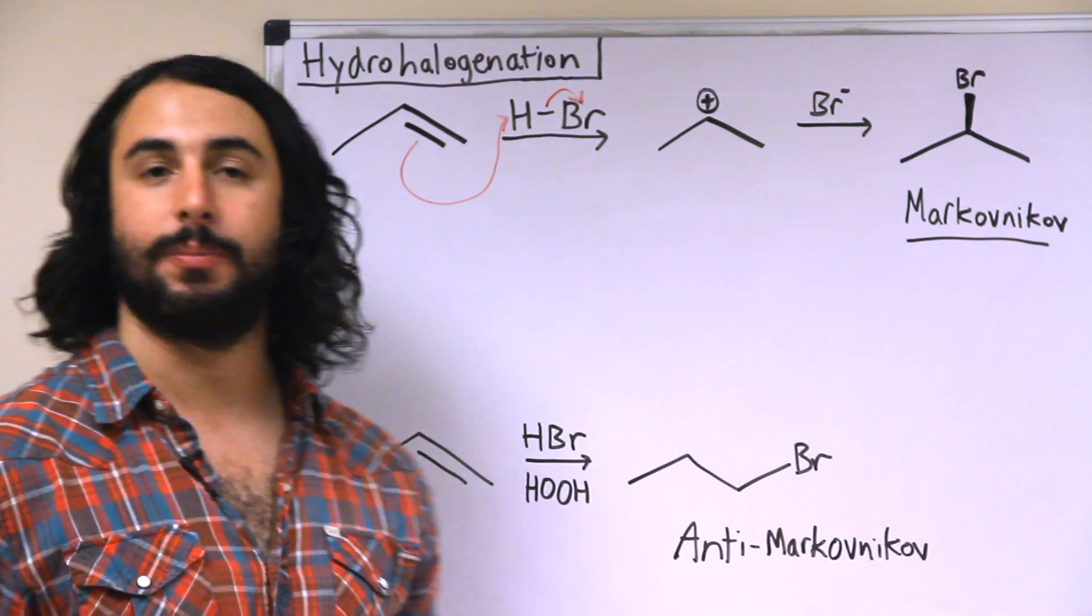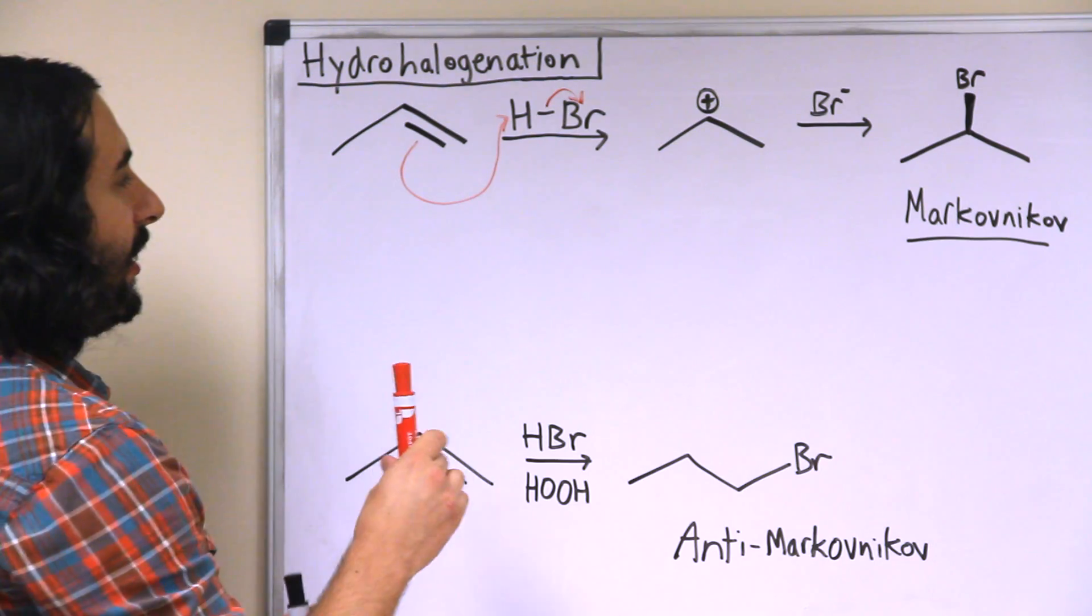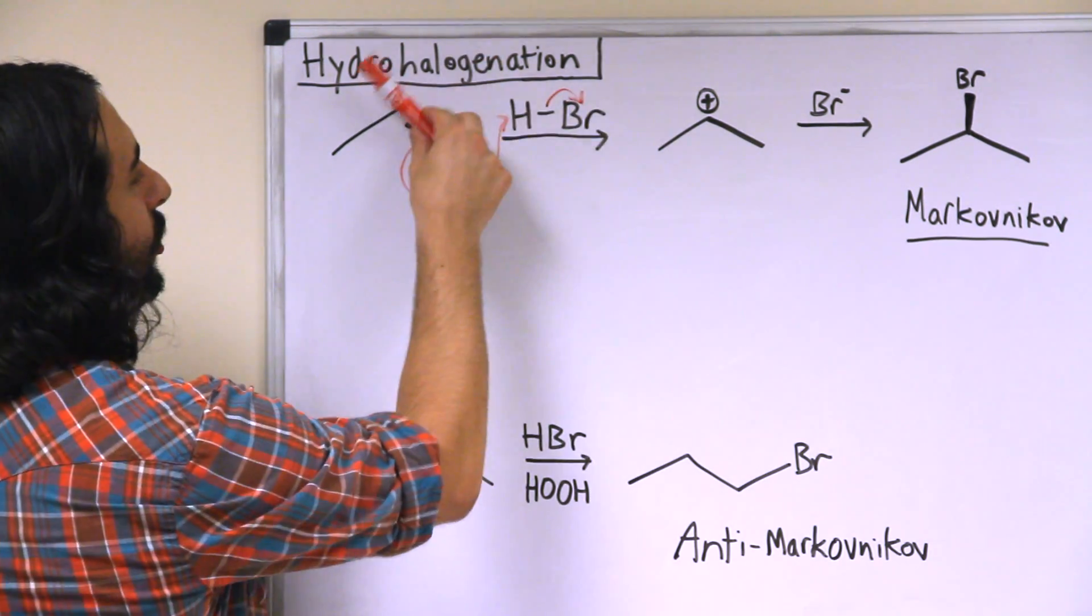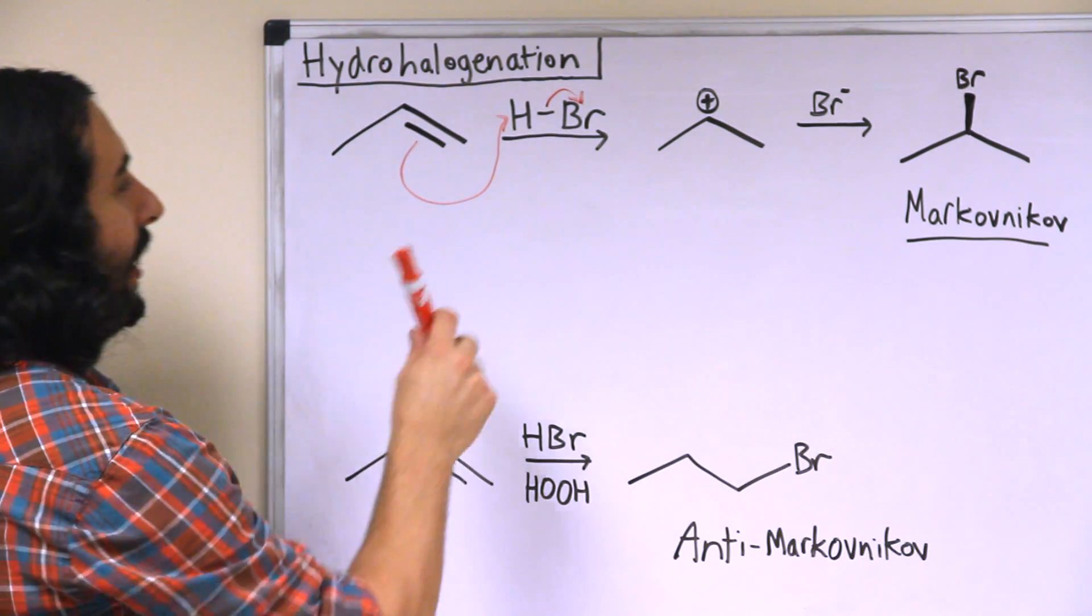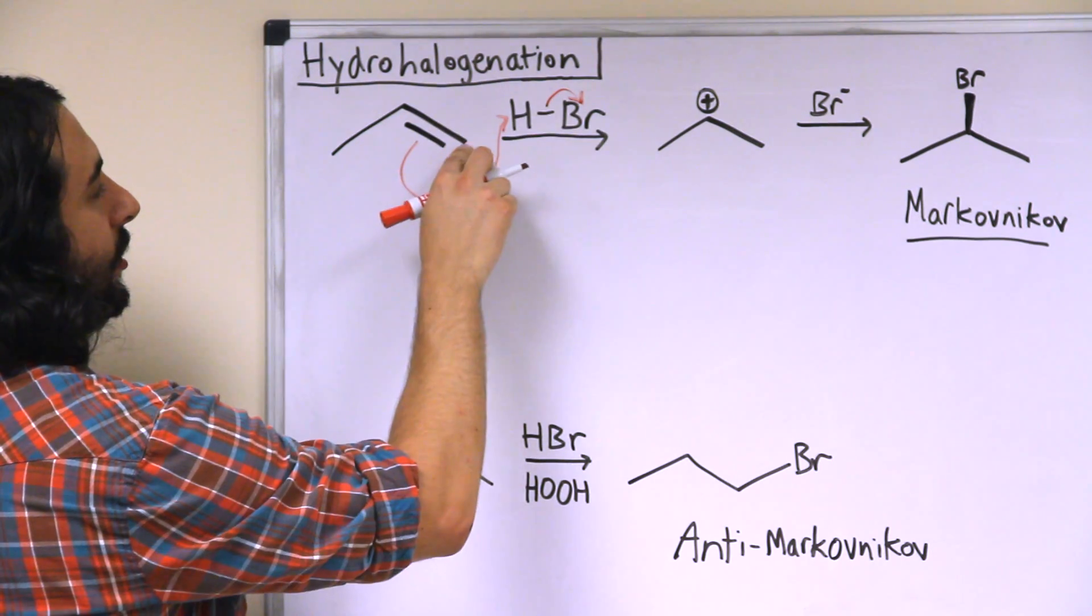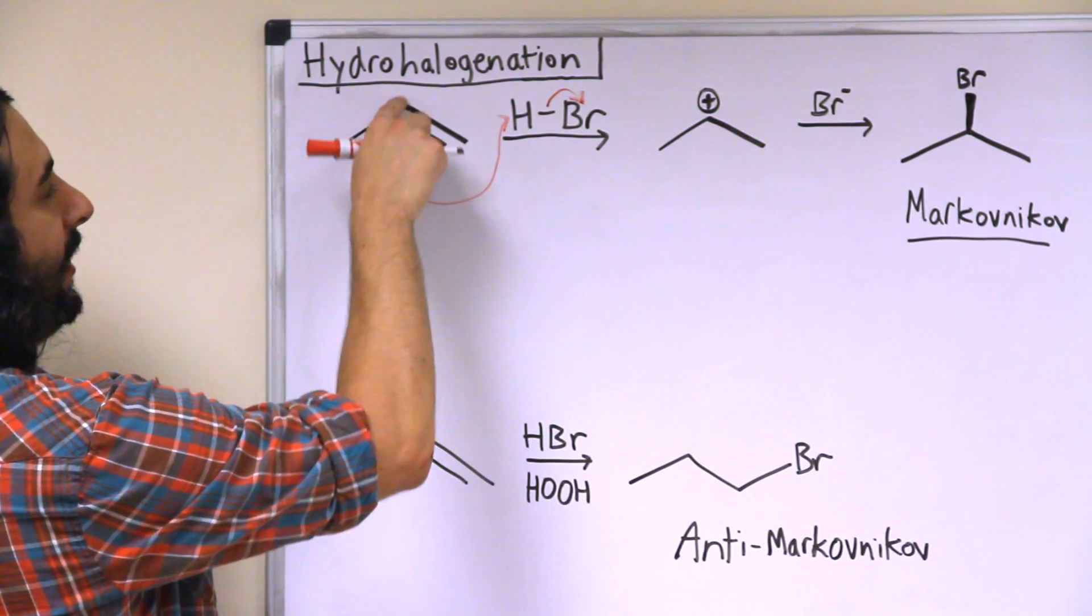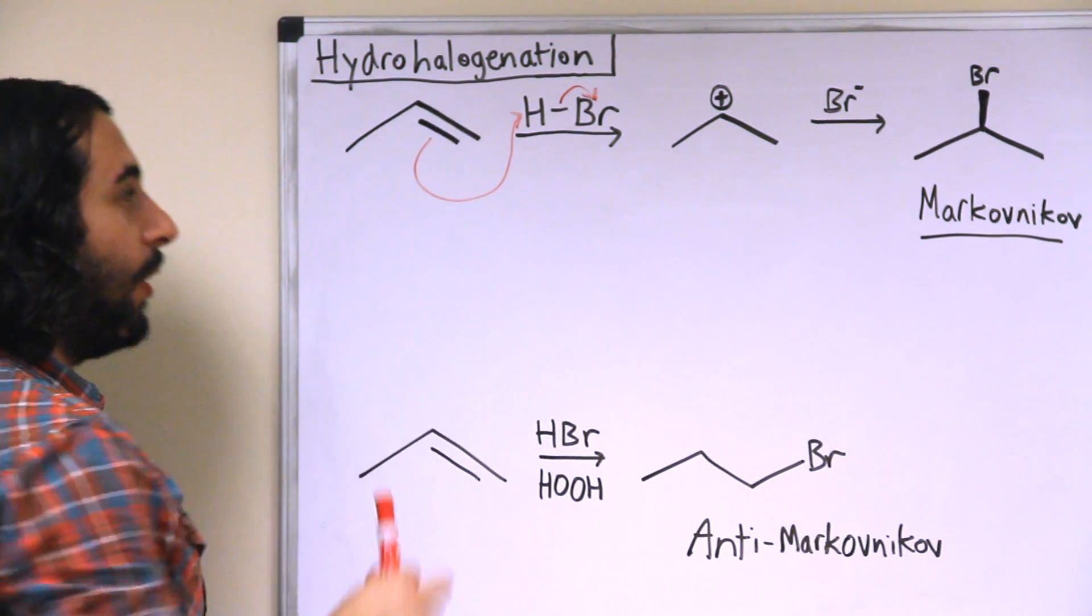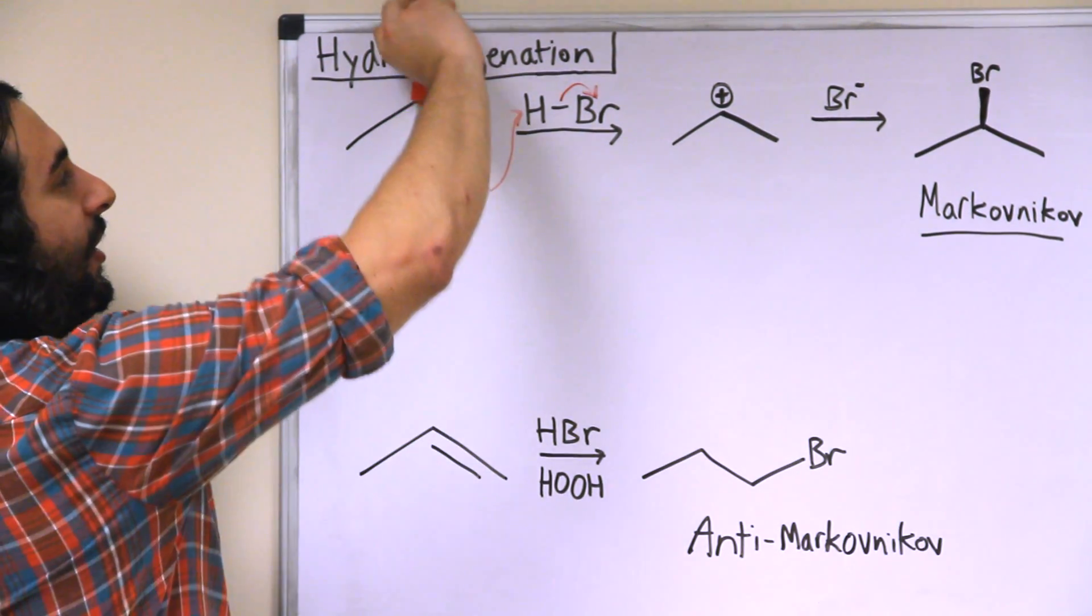There are two possibilities here. You can think of this pi bond sort of swinging out like a trap door one way or the other. Is it the case that the hydrogen will end up bound to this carbon, meaning that this carbon would lose an electron domain and be left with a carbocation, or will it swing out this way so that the hydrogen would be attached to this carbon leaving a carbocation over here?